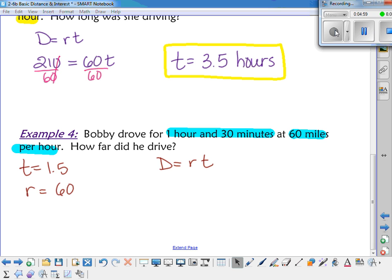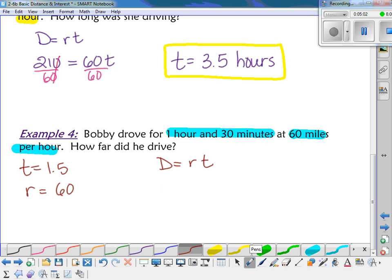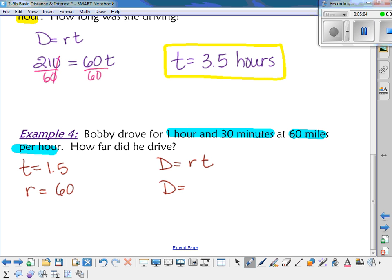So if you plugged it in, distance equals rate times time. So 60 times 1.5. That's one you guys can do in your head. That means I've got one 60 plus half of 60. What's half of 60? 30. What's 60 plus 30? 90. Or if you can't do it that way, you can always just write down the multiplication problem and do it that way too. So let's move on to the other side and talk about simple interest.